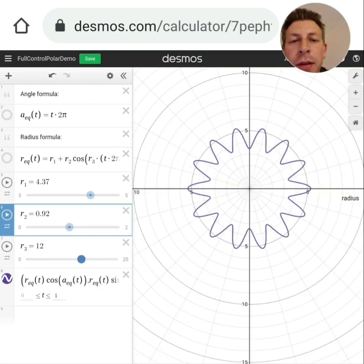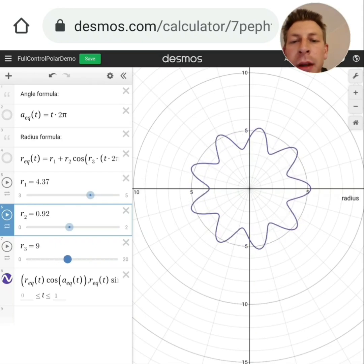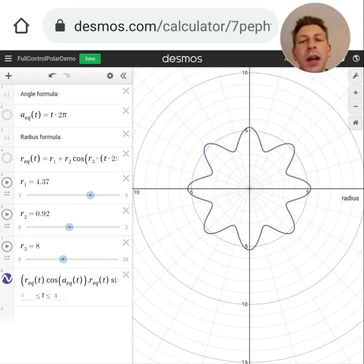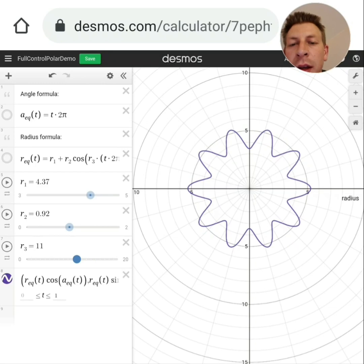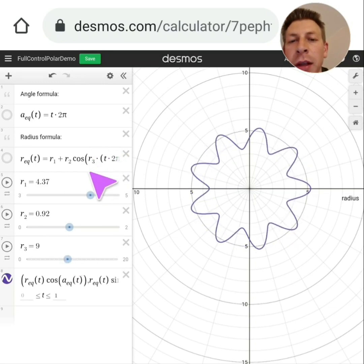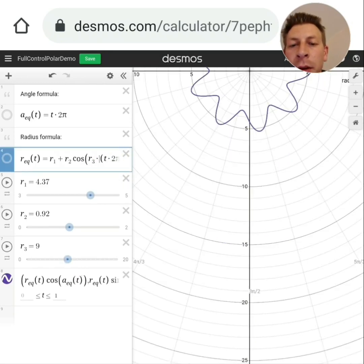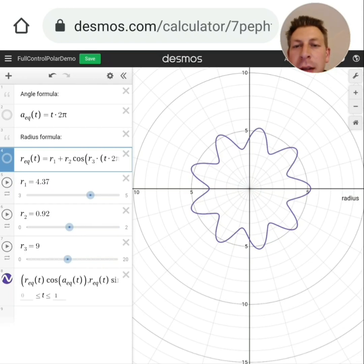And then in this case I've got a parameter here which changes the number of points. So in some of the parametric files I've shared, I've given an option to say how many star points you want for a star shape geometry. And that's this value here which is just a number that's going inside the cos formula.